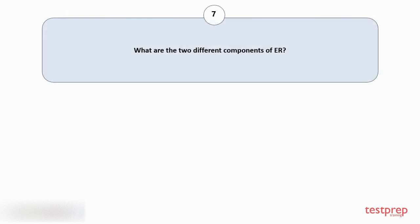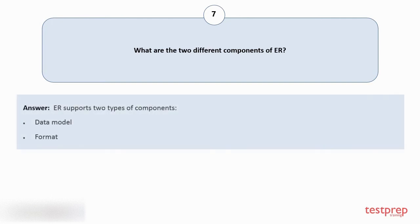Question number 7: What are the two different components of ER? ER supports two types of components: 1. Data model. 2. Format.